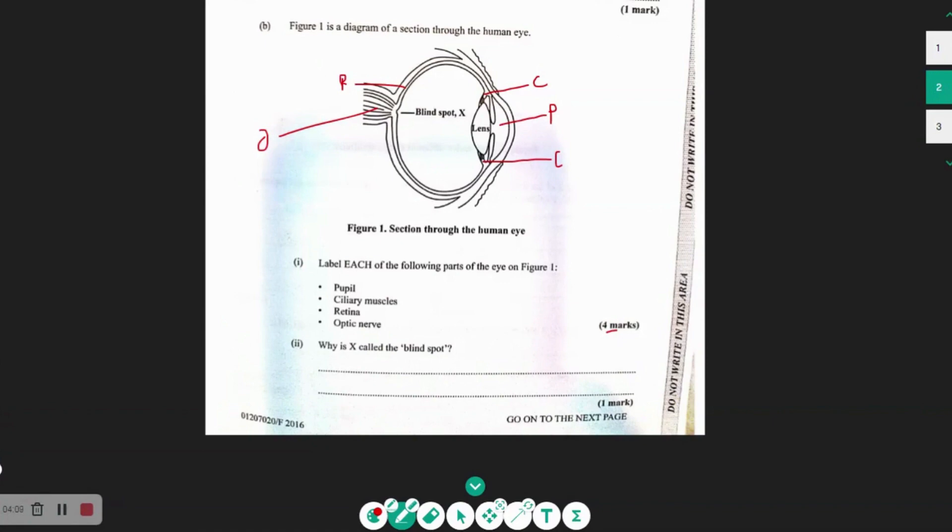So we have the retina there with the rods and cones. But at the blind spot, there are no sensory cells. So if there are no sensory cells here, then even if light falls there, there is nothing to receive that information. So this is why X is called the blind spot, because there are no sensory cells at that spot.